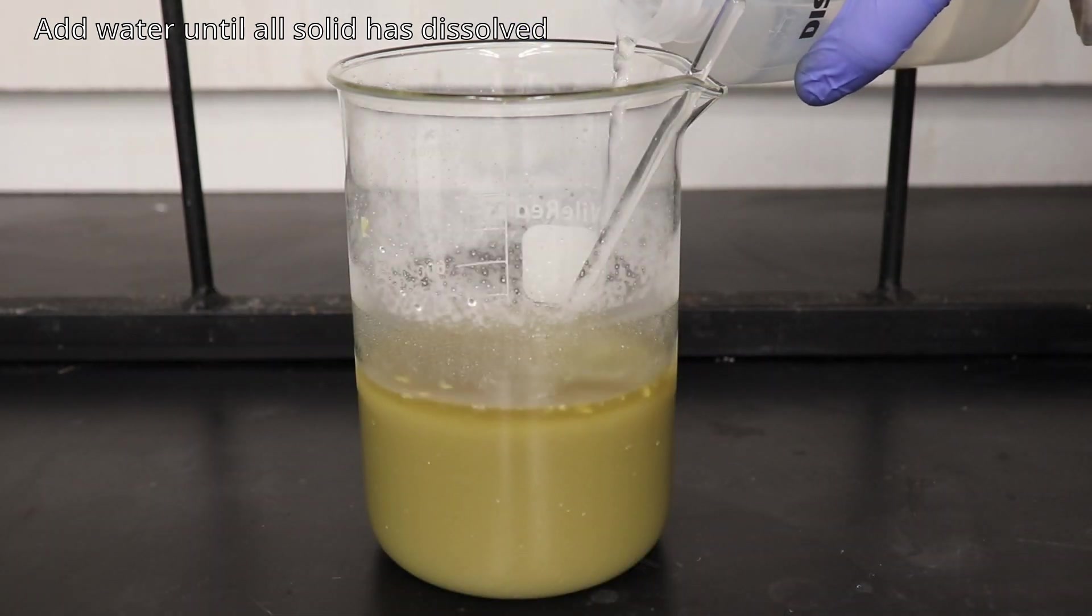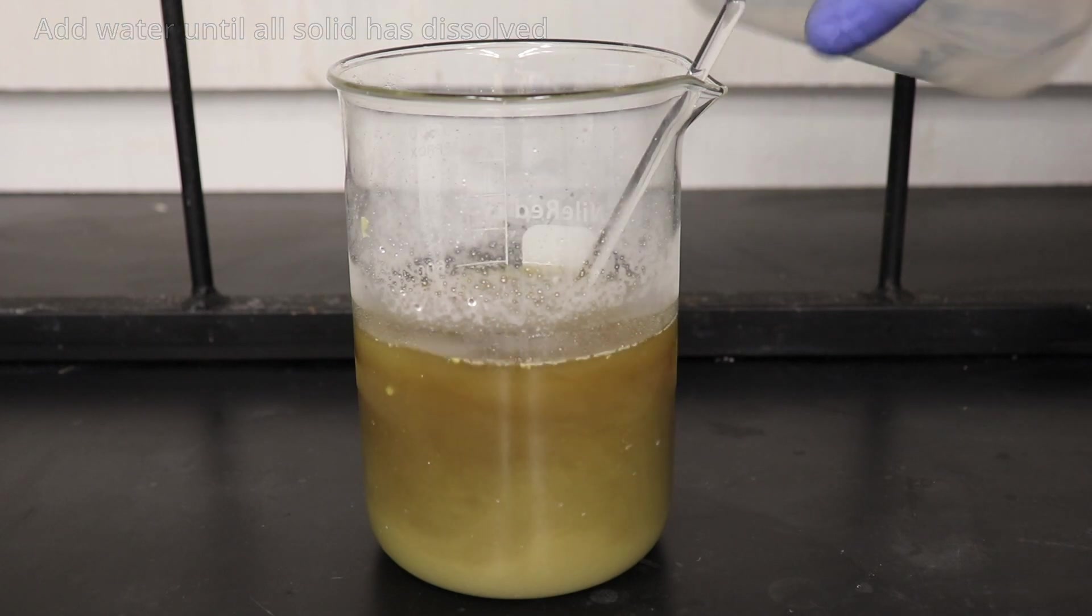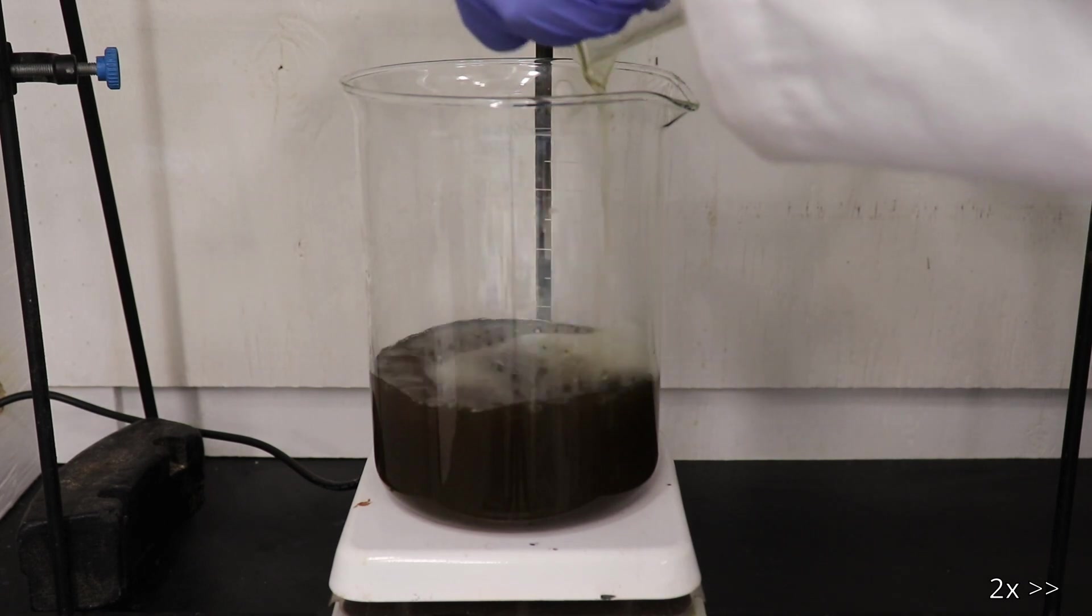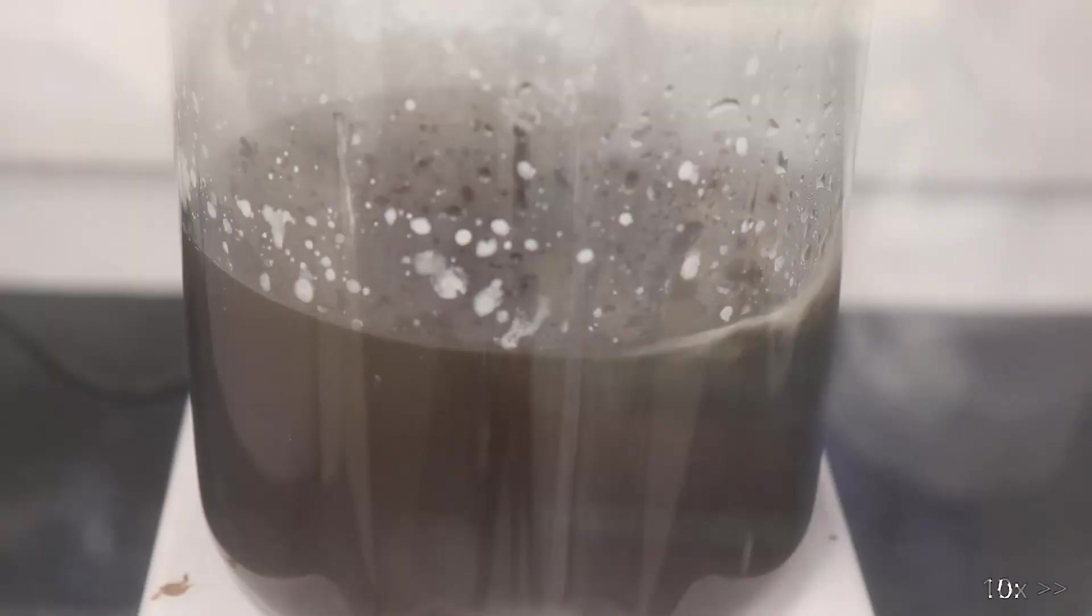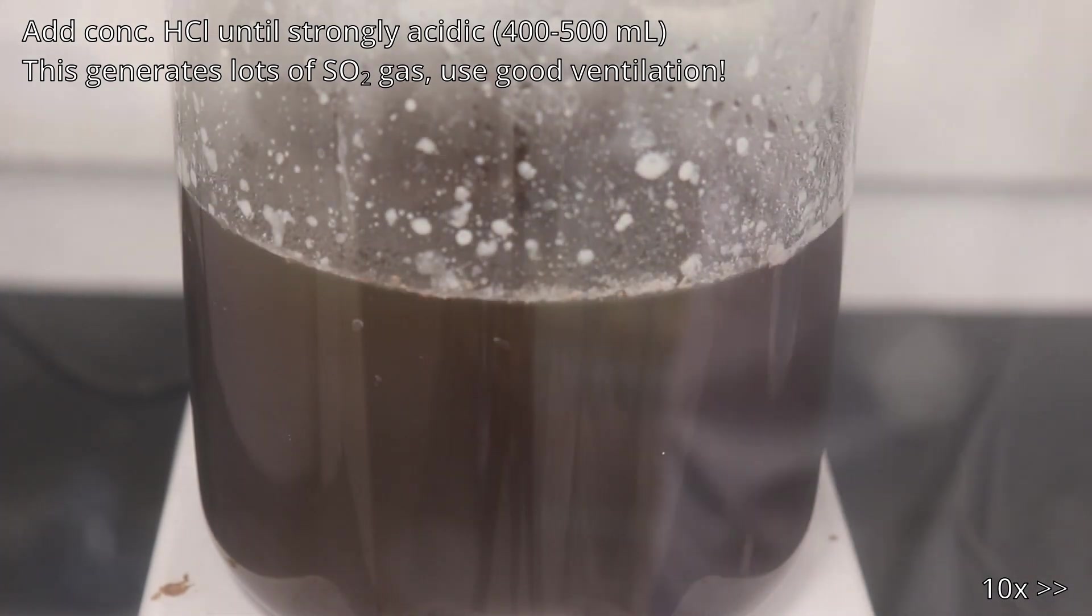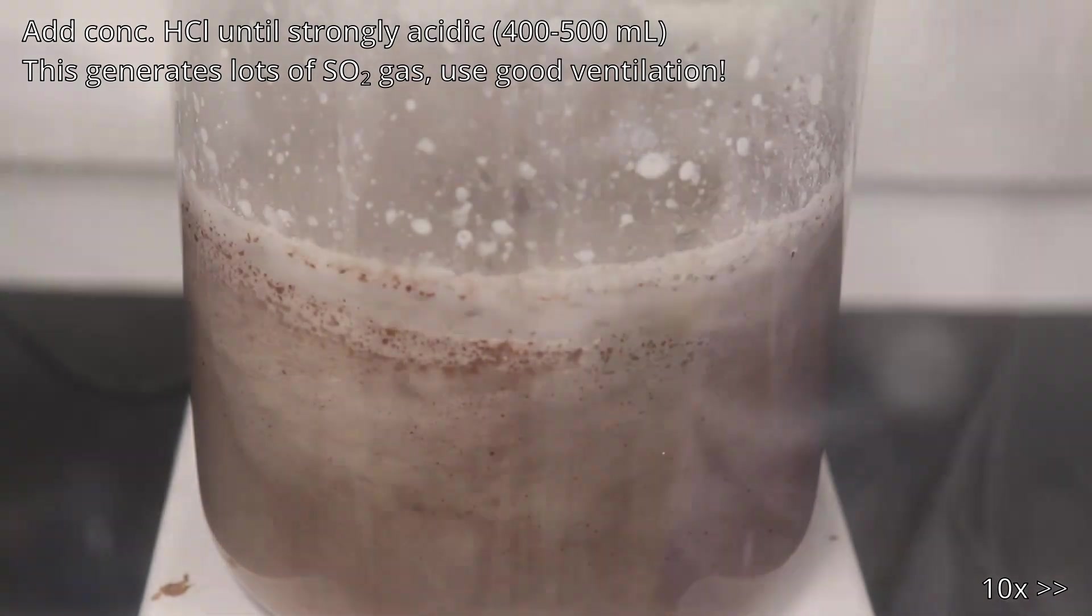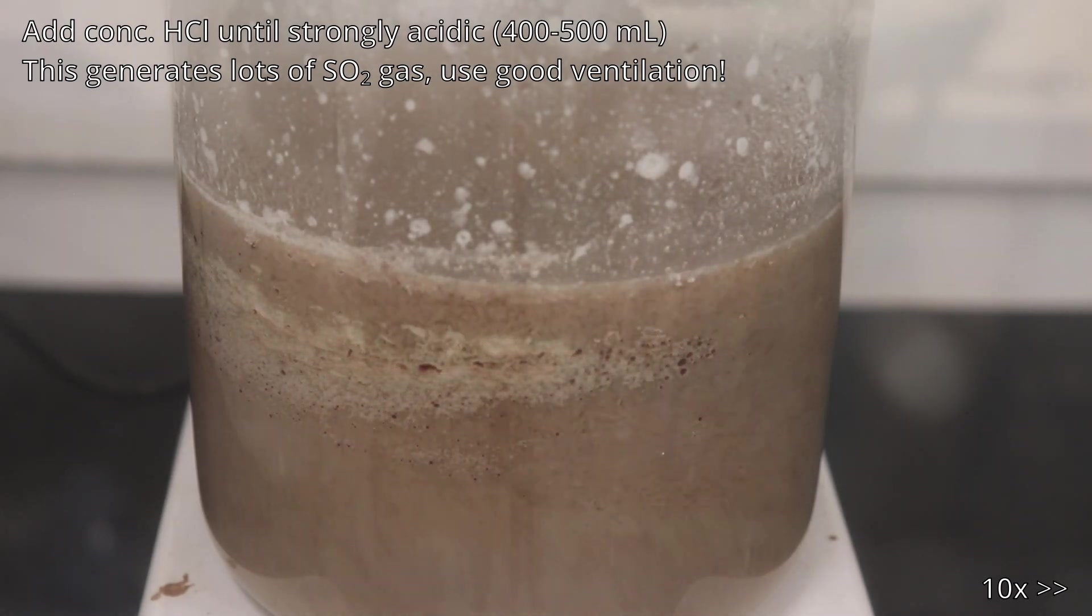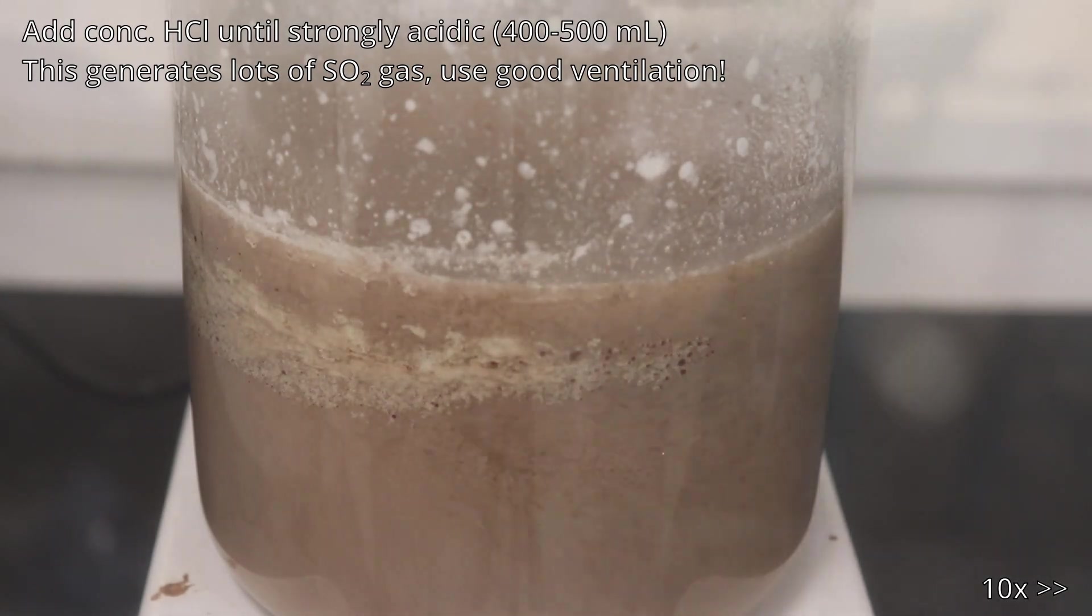Then water was added until the mixture was fully dissolved. Concentrated hydrochloric acid was then added until the mixture was strongly acidic, which took about 400 to 500 milliliters. This precipitated out the 2-naphthol and evolved large amounts of sulfur dioxide gas.